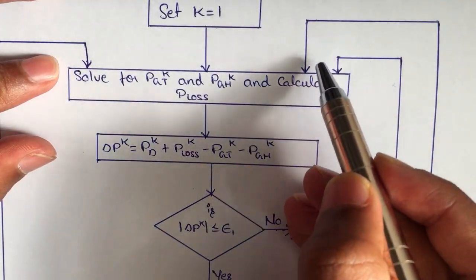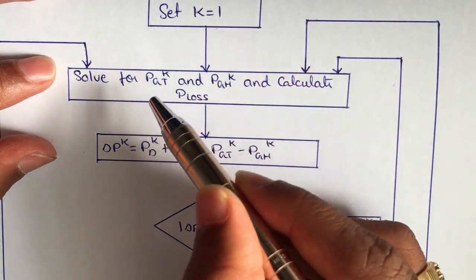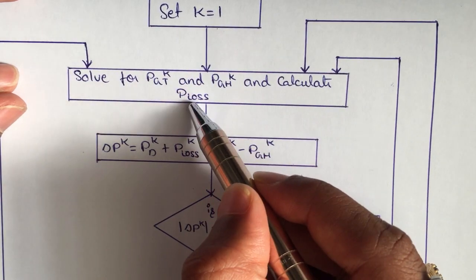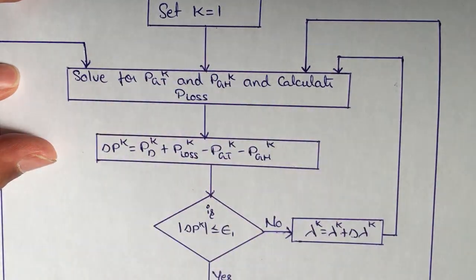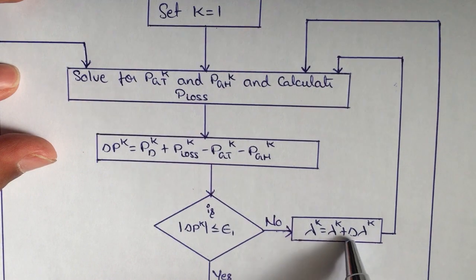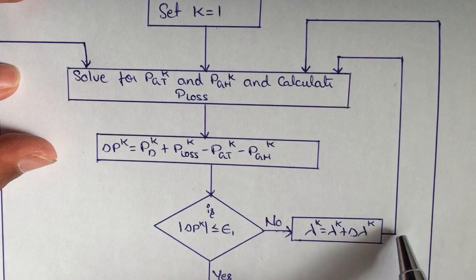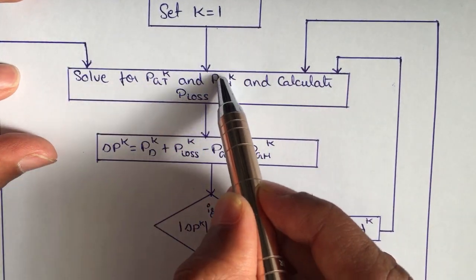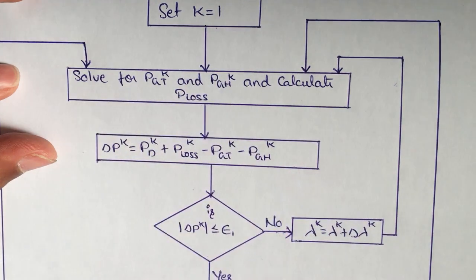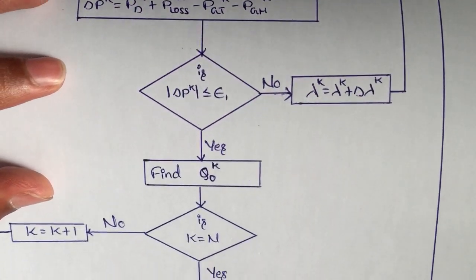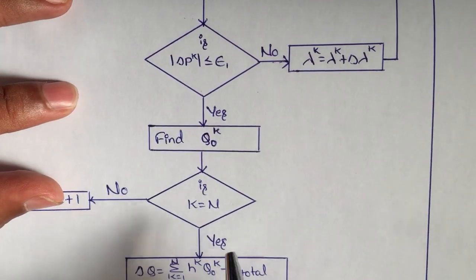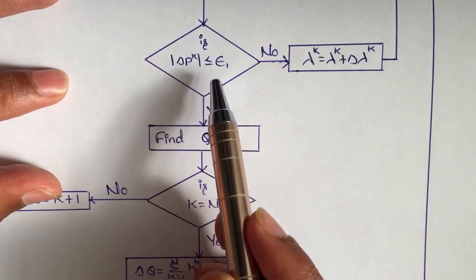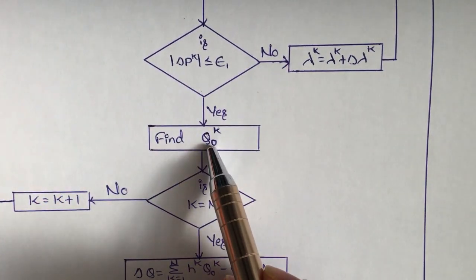After increasing lambda, we move back to recalculate the new values of PGT k, PGH k, and P loss. If delta P_k is less than epsilon 1, we proceed to find the value of q naught.